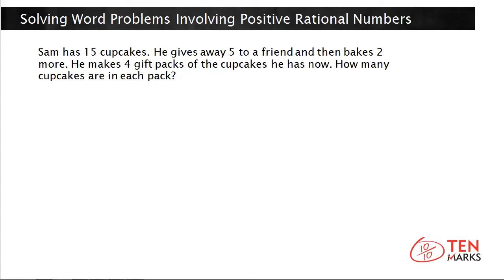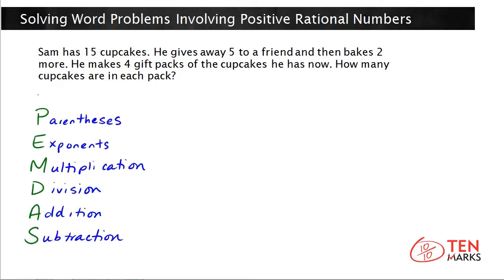When you have multiple operations in a single expression, you need to follow a certain order. First, you solve anything that's in parentheses. Next, you simplify or evaluate any exponents. Third, you perform multiplication. Fourth, you divide. Fifth, you add. And sixth, you subtract.